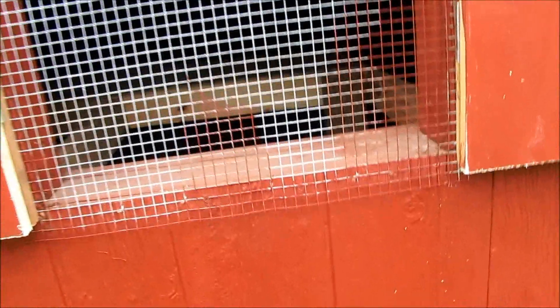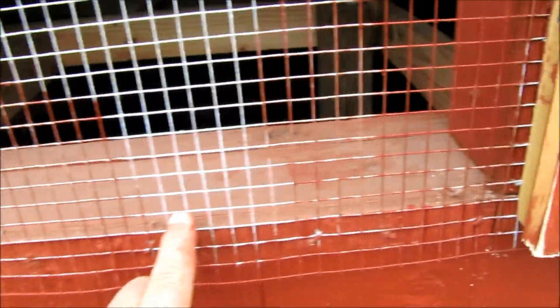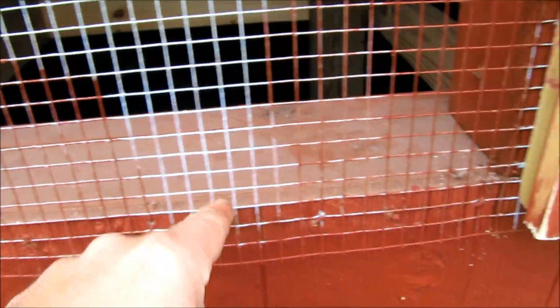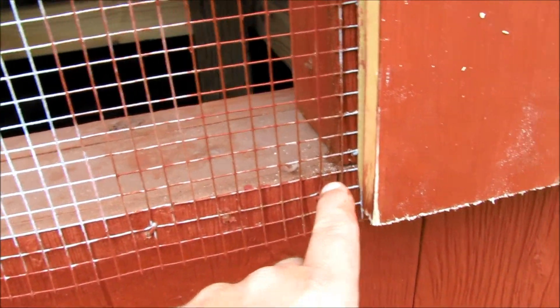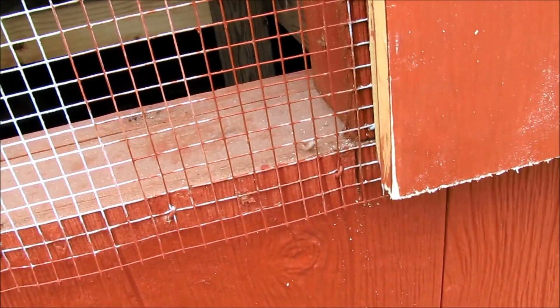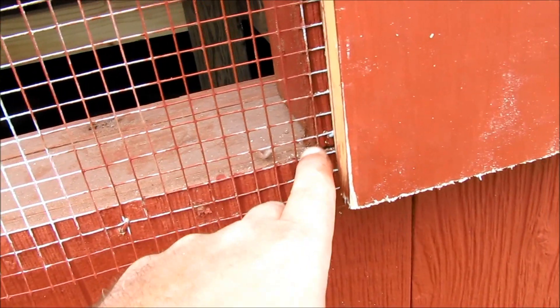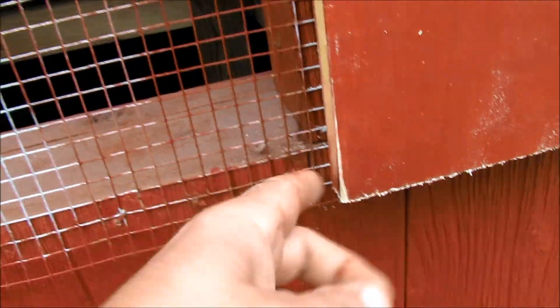Once we had the inside framed in, there's the pressure treated two by fours on the inside, we took a drill bit. I think I used a half inch or five eighths drill bit, just a big paddle bit, from the inside and bored a hole outwards.